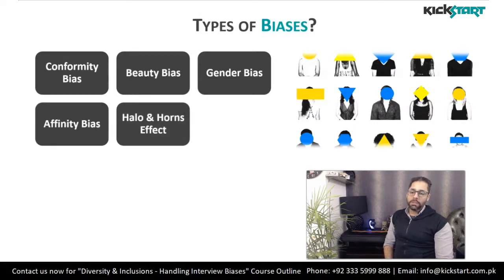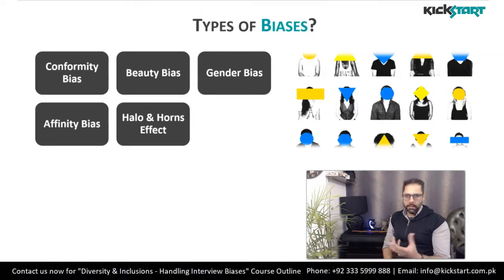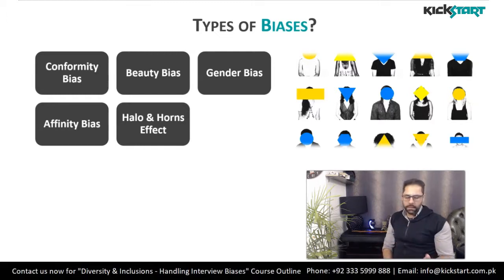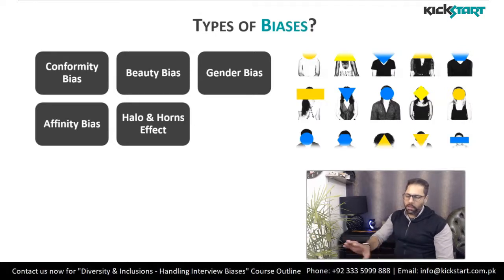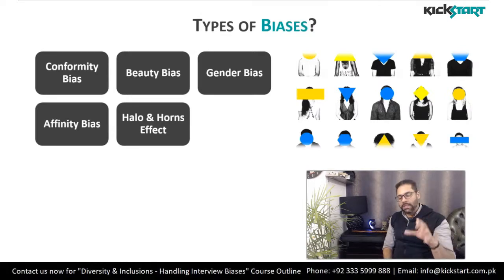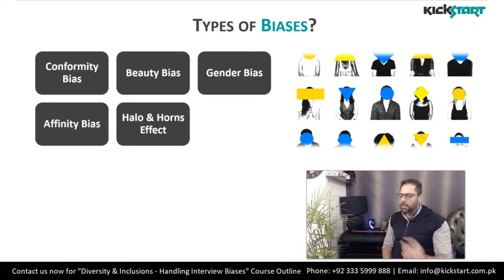Next we have the halo and horn effects, which are opposites of each other. In the halo effect, the candidate shares something during the interview that you really like, and based on that one answer you make your entire judgment without going into details about other important things in the job description. The horn effect is the flip side — one thing that the candidate says which you dislike will overshadow your entire decision towards that individual.